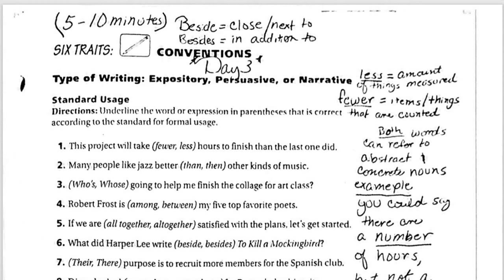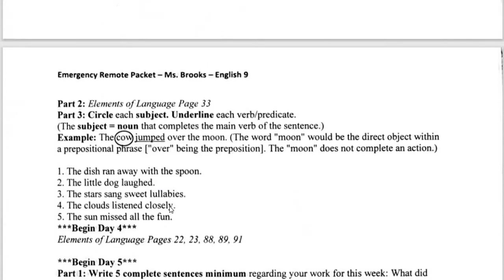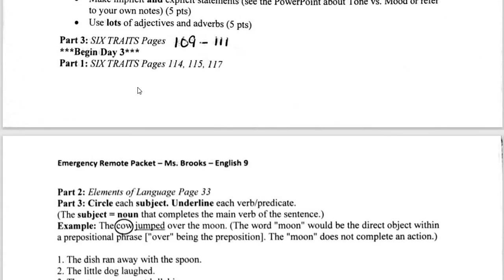Two days down and only about a thousand more to go, but here we are on day three. On day three, you have mostly worksheets to do. After you finish page 111, you'll go to day three six traits: pages 114, 115, and 117.